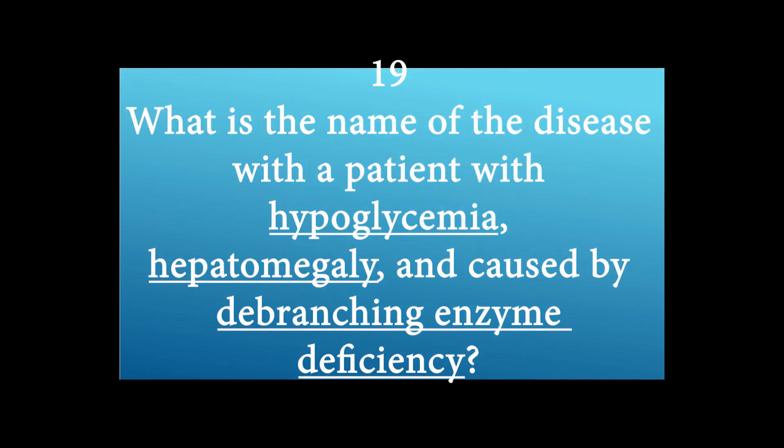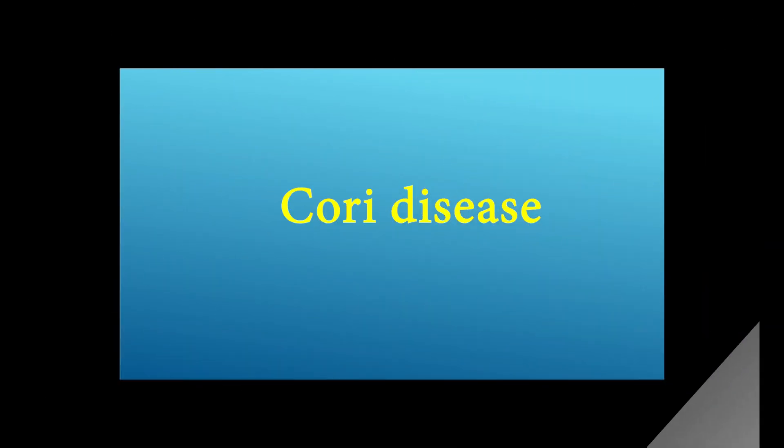What is the name of the disease with a patient presenting with hypoglycemia, hepatomegaly, and caused by debranching enzyme deficiency? Cori disease.